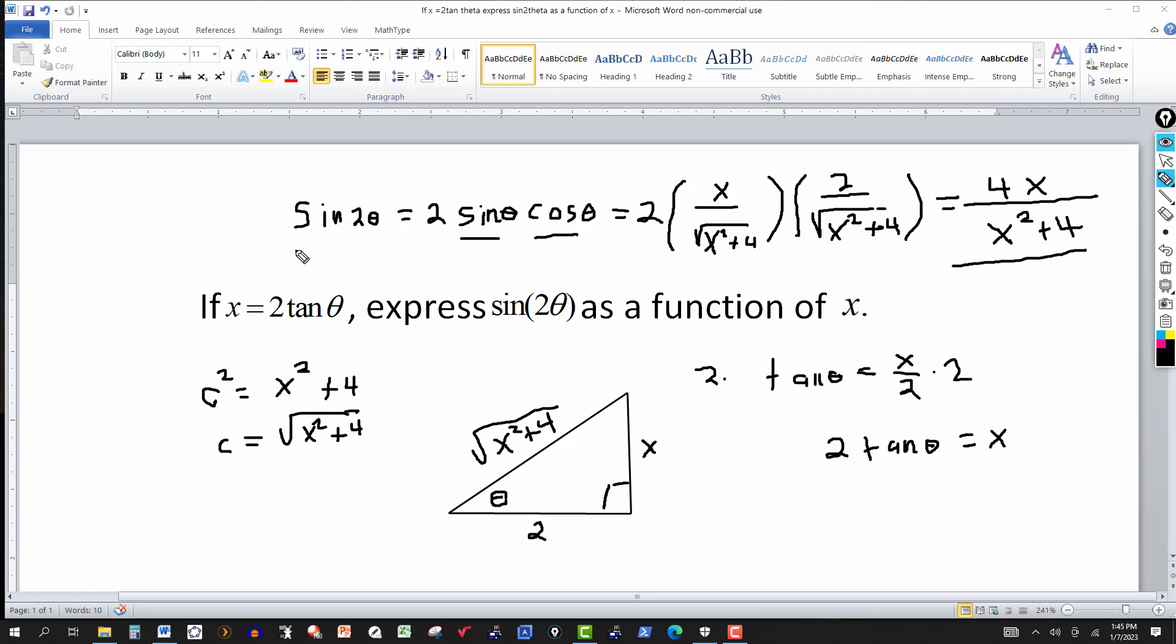There we have it. So sine of 2 theta as a function of x is 4x over x squared plus 4.